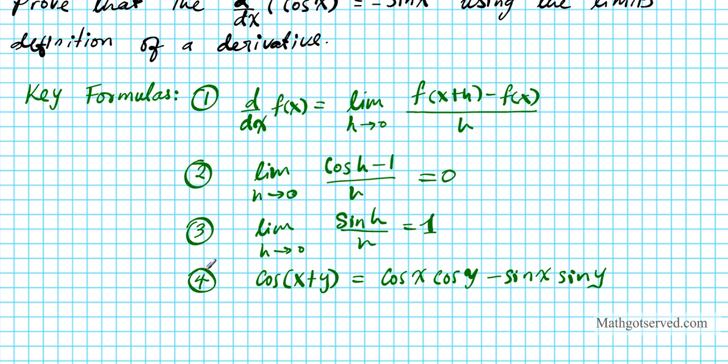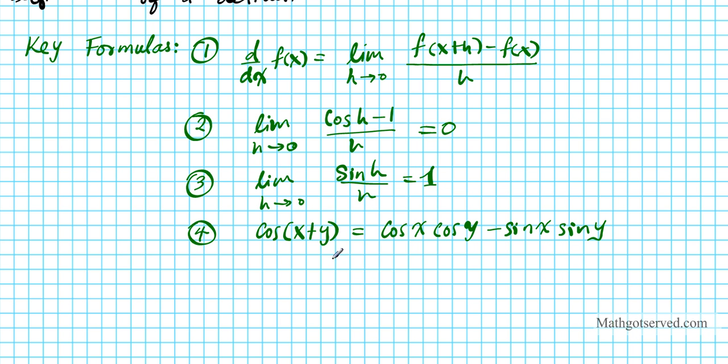Number 4 is actually an identity from trigonometry, the sum identity for cosine. If you recall, cosine (x + y) equals cosine x cosine y minus sine x sine y. These are the formulas I'm going to use in the context of this proof. So let's go ahead and get started.